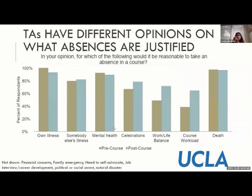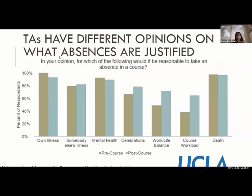For the attitude surveys conducted in the course, we asked TAs to analyze 13 different reasons why a student might miss class and tell us if those are good reasons or not. We got a fairly wide range of responses — reasons like the death of a family member or a student being sick themselves were found justifiable, whereas things like work-life balance and course workload were less likely to be deemed justifiable to TAs. Interestingly, post-course, work-life balance and course workload ended up being more justifiable to TAs.